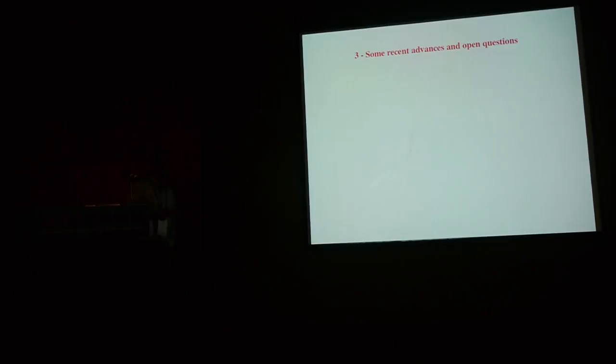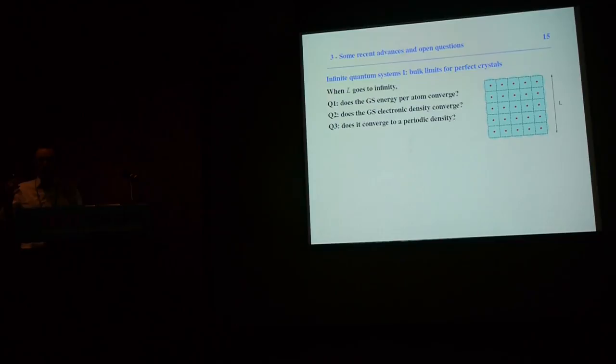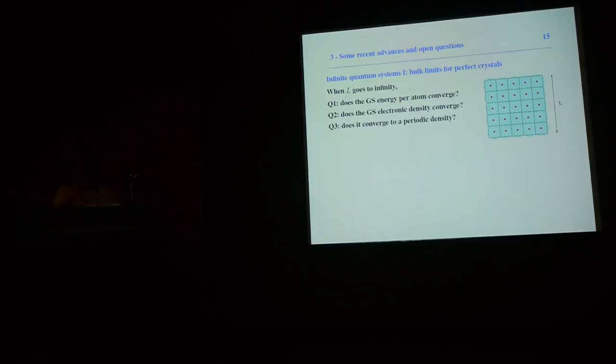Let me present some recent advances and open questions, starting with a purely theoretical result on infinite quantum systems. A piece of matter contains 10²⁰ or more atoms. For a perfect crystal, rather than dealing with 10²⁰ atoms, it is better mathematically to deal with an infinite system, taking advantage of periodicity. The bulk limit problem proceeds by placing a finite number of atoms in a cube of side L on a cubic lattice, computing the ground state energy and density, and letting L go to infinity.